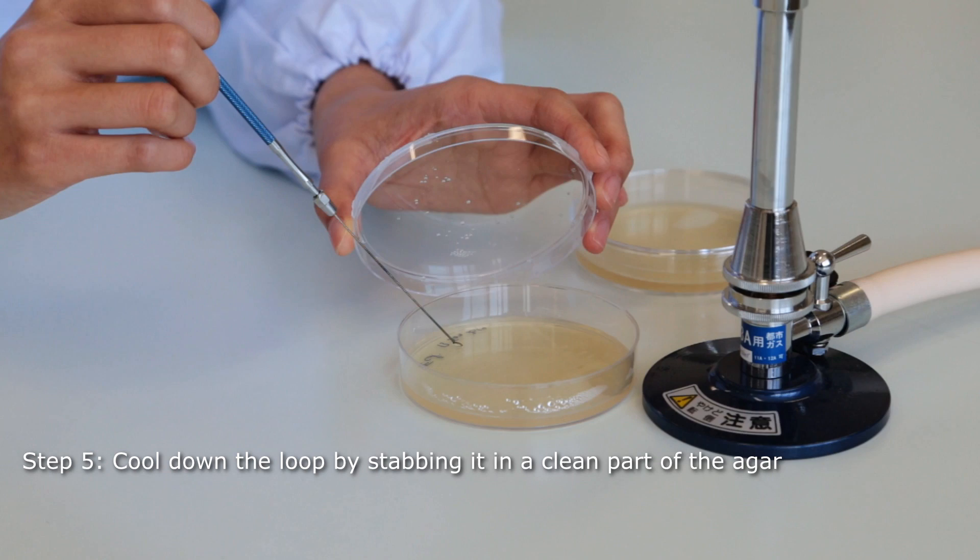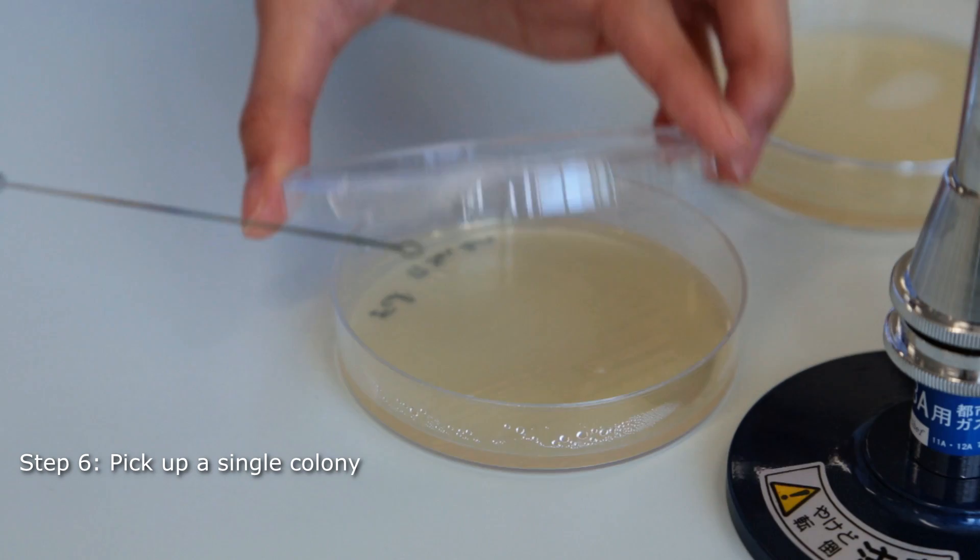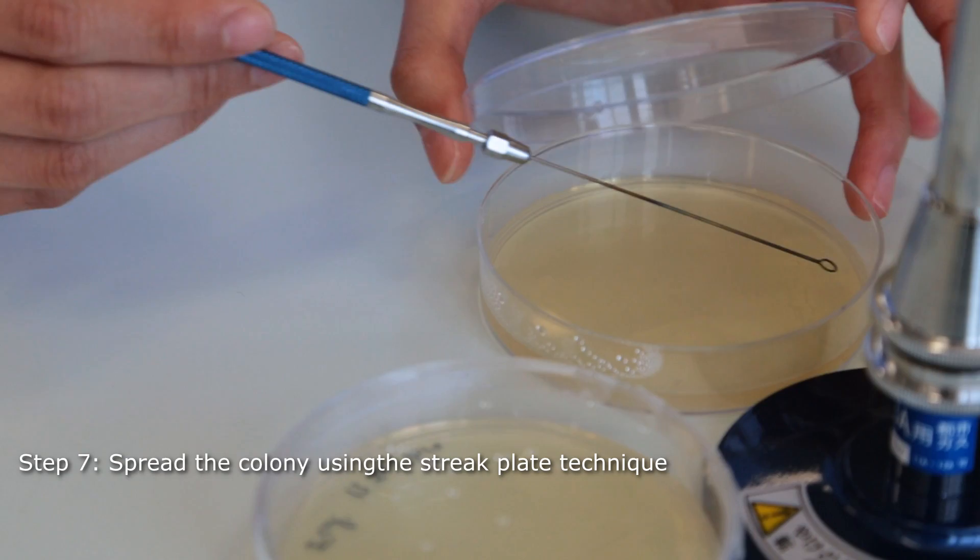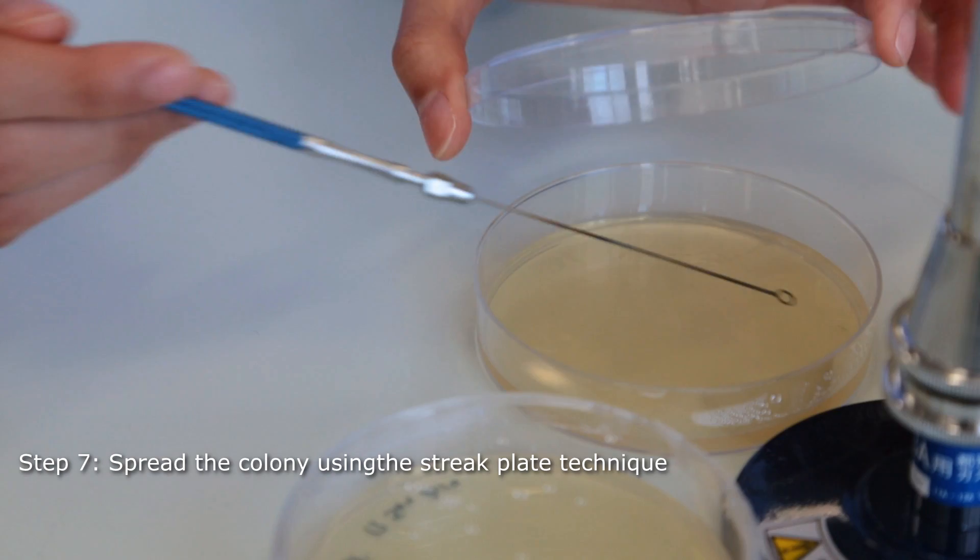Pick up a single colony by touching it with your loop. Streak a clean petri dish using the quadrant method. The goal is to reduce the bacterial load at every streak to separate single bacterial cells. Do not let the loop go back into the previous quadrants, where most of the original inoculum was deposited.